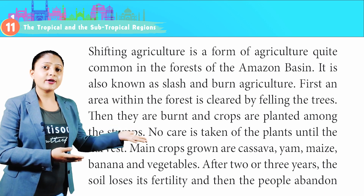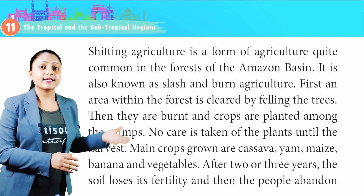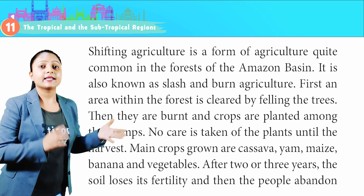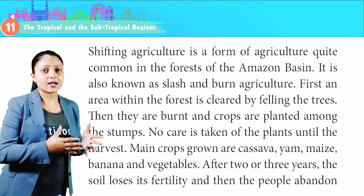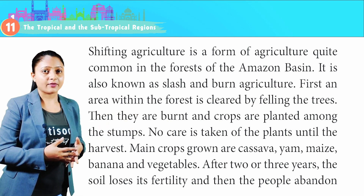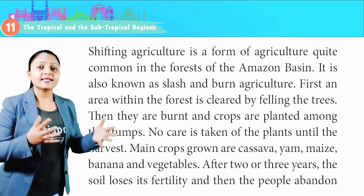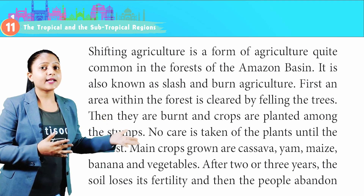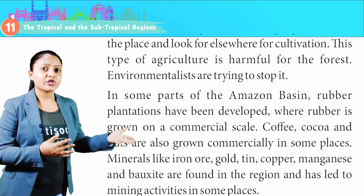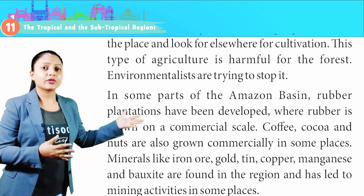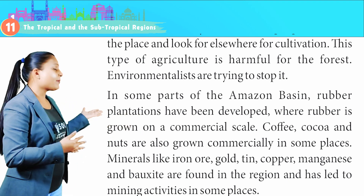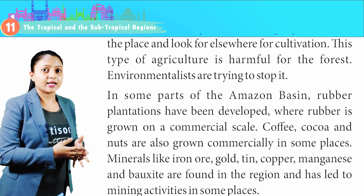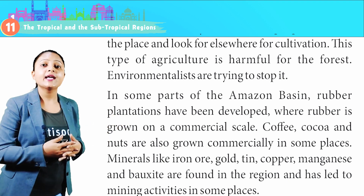Shifting agriculture is quite common in the forests of the Amazon Basin and is also known as slash and burn agriculture. First, an area within the forest is cleared by felling trees, which are then burned, and crops are planted among the stumps. No care is taken of the plants until harvest. Main crops grown are cassava, yam, maize, banana and vegetables. After two or three years, the soil loses its fertility and the people abandon the place to look elsewhere for cultivation. This type of agriculture is harmful for the forest, and environmentalists are trying to stop it. In some parts, rubber plantations have been developed on a commercial scale, and coffee, cocoa and nuts are also grown commercially.